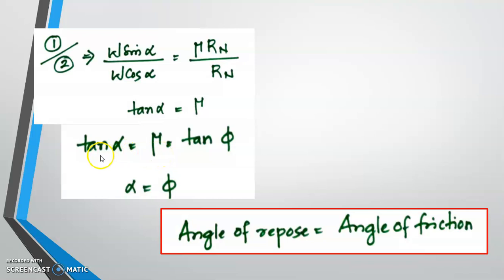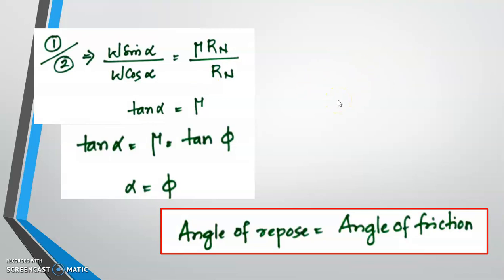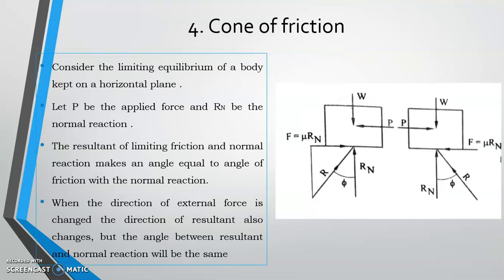We have already shown that tan phi equals mu. So for small values of alpha and phi, alpha equals phi. Therefore, the angle of repose alpha equals the angle of friction phi. This is an important result: the maximum angle at which a body can repose without applying an external force equals the angle of friction.